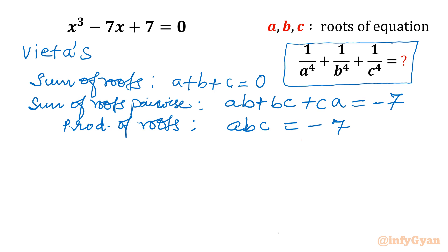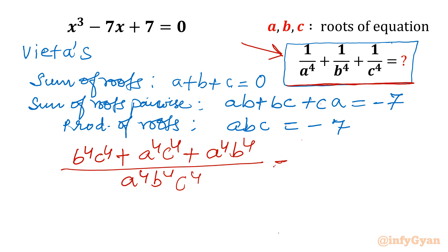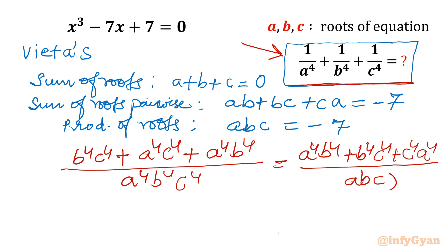Now I will simplify the given expression. Taking LCM, I can write it as (b⁴c⁴ + a⁴c⁴ + a⁴b⁴) divided by a⁴b⁴c⁴, which rearranges to (a⁴b⁴ + b⁴c⁴ + c⁴a⁴) divided by (abc)⁴. The denominator is clear since abc = -7, so the denominator becomes (-7)⁴.